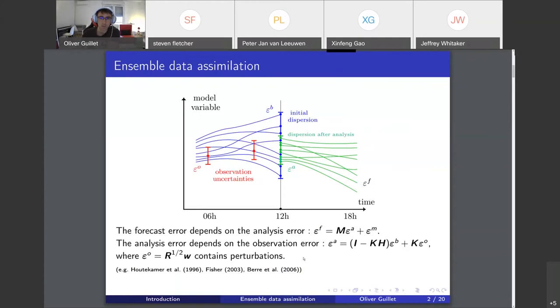In the case of ensemble data assimilation, we want to simulate epsilon zero as the square root of R times a white noise. So we generate perturbations, and that will be the topic of this talk.